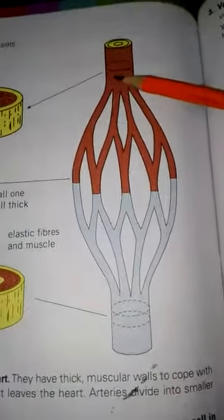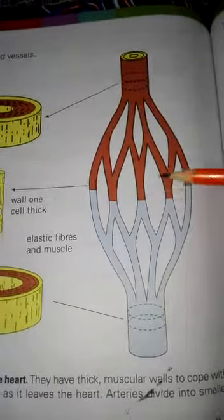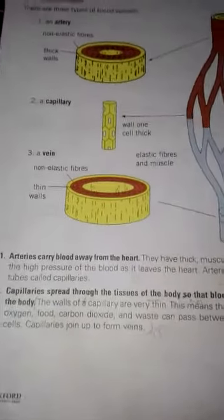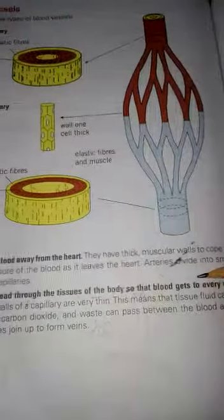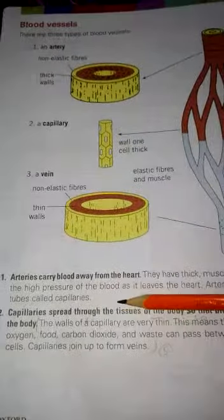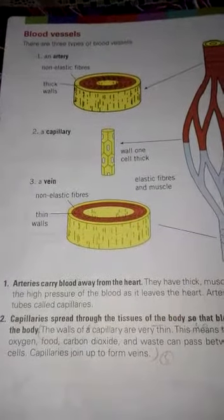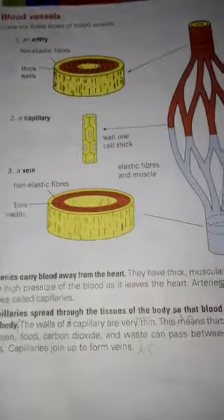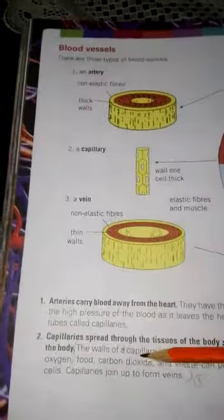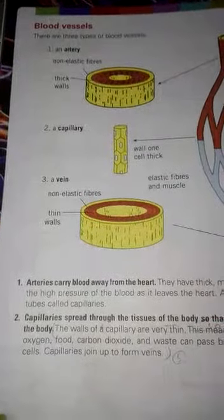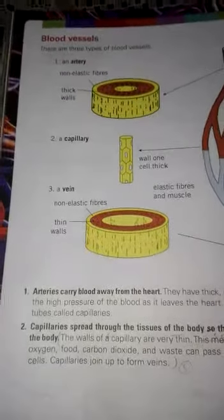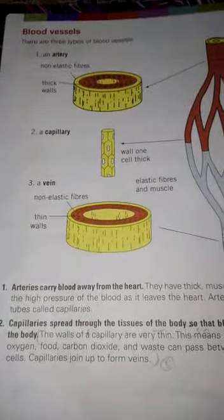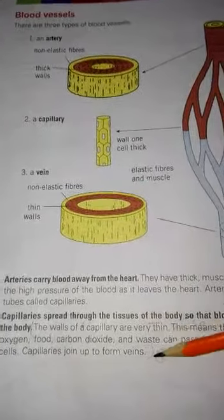In the diagram you can see the artery divides to form smaller tubes called capillaries, and then capillaries join to form the vein. Capillaries spread through the tissues of the body so that blood gets to every cell. The walls of the capillaries are very thin, which means tissue fluid carrying oxygen, carbon dioxide, and waste can pass between the blood and the cells. In this way, exchange takes place between the cells and the blood plasma.